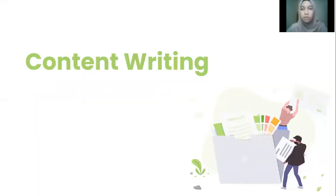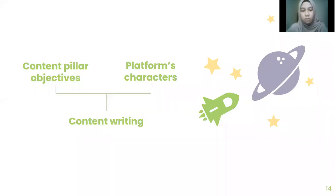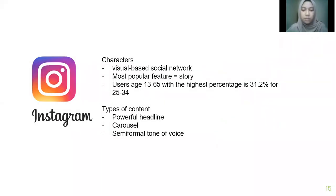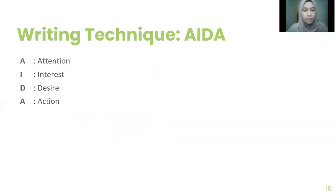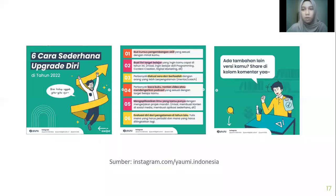Right now we are on content writing. Content writing needs to align with the platform's characters and also the content pillar objectives. For example, Instagram — Instagram is a visual-based social network with the most popular feature being story. The user's age ranges from 13 to 65 with the highest percentage being 31.2% for 25 to 34. With this in mind, we can create types of content with a powerful headline in the form of carousel with a semi-formal tone of voice. A very common technique in writing is AIDA — it stands for attention, interest, desire, and action.